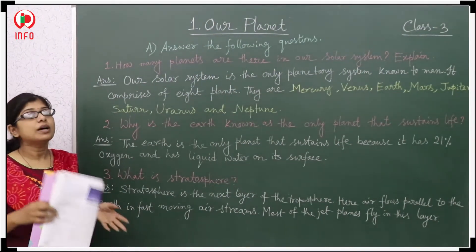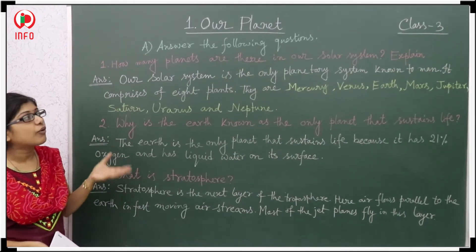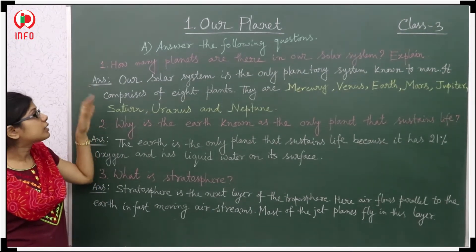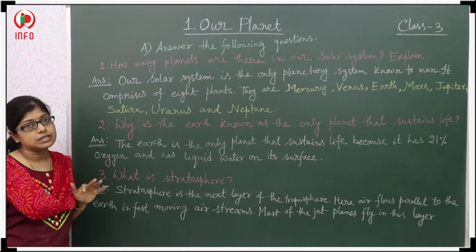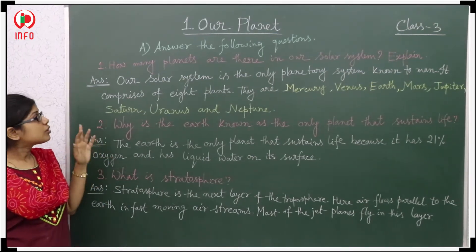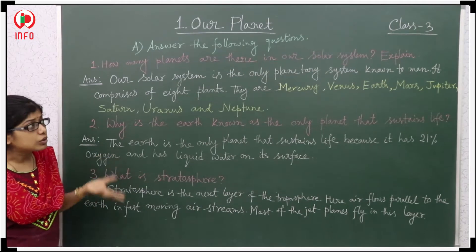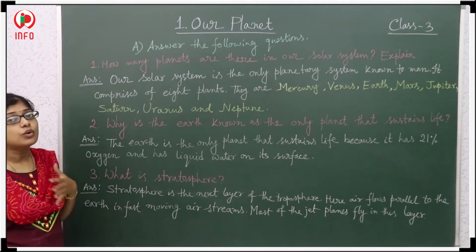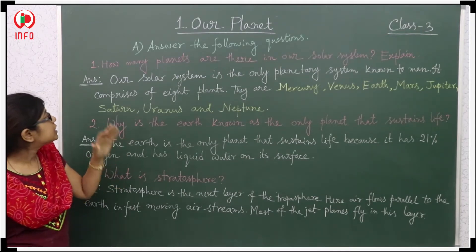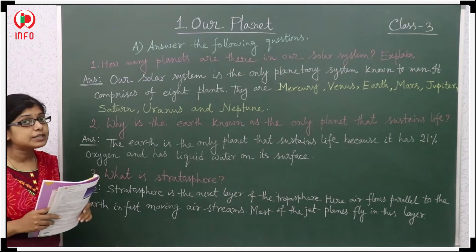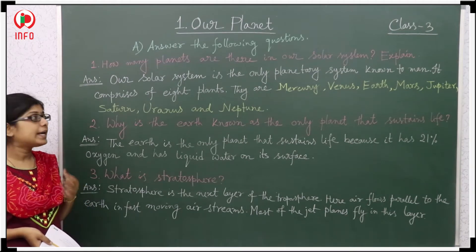Now I will discuss the question answers. First question: How many planets are there in our solar system? Our solar system is the only planetary system known to man, and it comprises 8 planets.